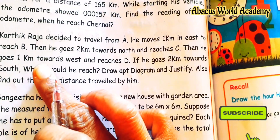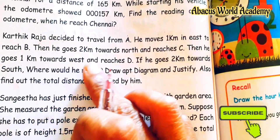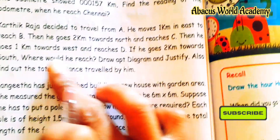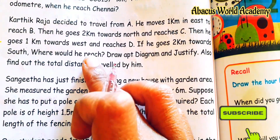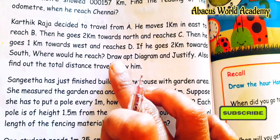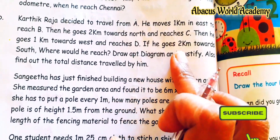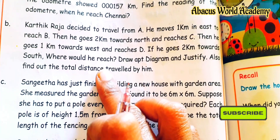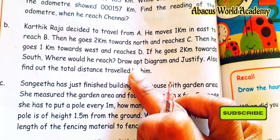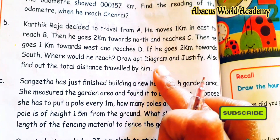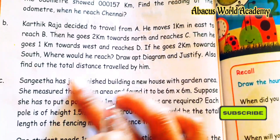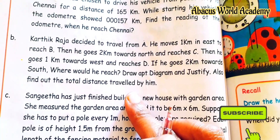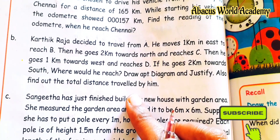Kattrick Raja decided to travel from A. He goes 1 km towards east to reach B. Then he goes 2 km towards north to reach C. Then he goes 1 km towards west and reaches D. If he goes 2 km towards south, where would he reach? Draw an apt diagram and also find the total distance traveled by him.